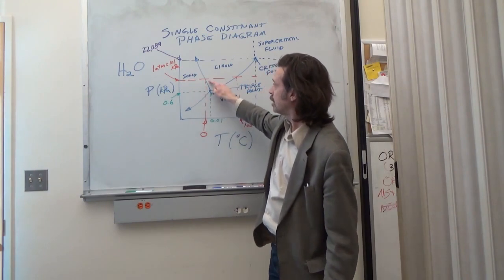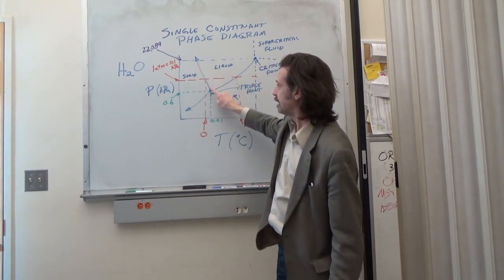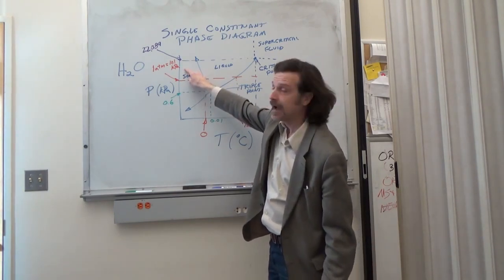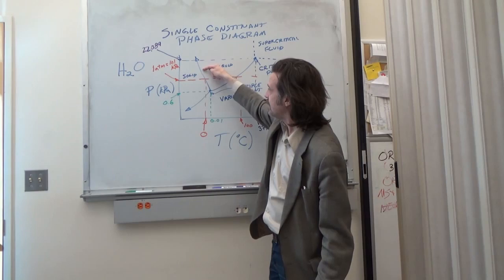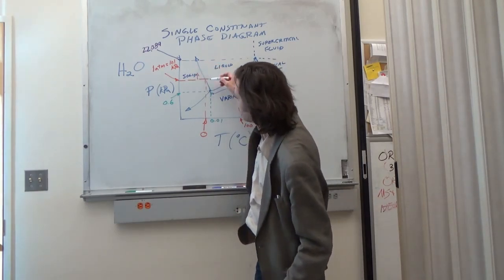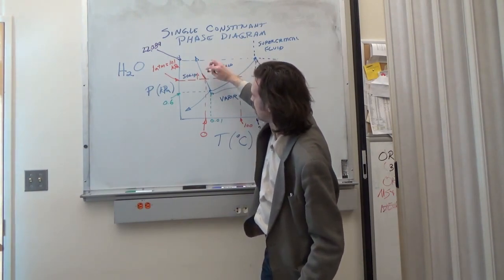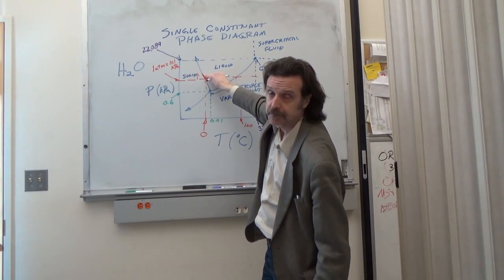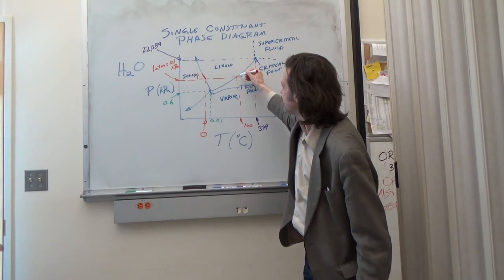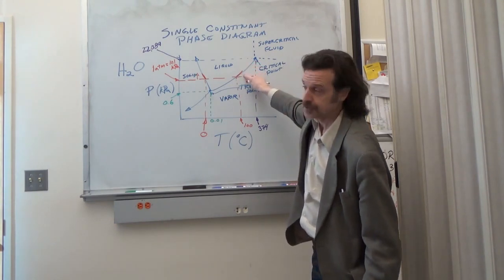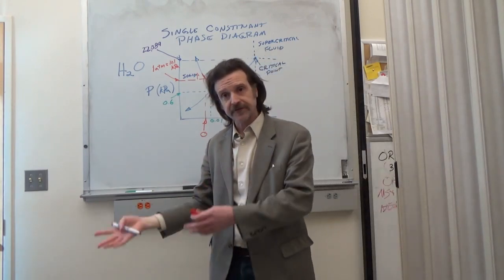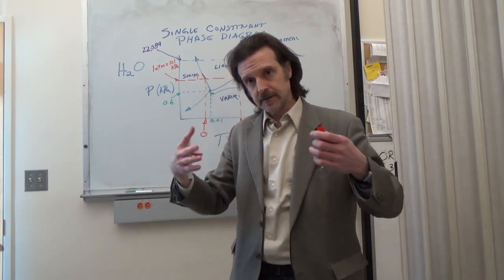As we change the pressure we're essentially saying that this blue line is a change in the melting temperature. So if we go to a slightly higher pressure then the pressure is going to shift the melting point to a lower temperature and it's going to shift the vaporization point to a higher temperature. So this phase diagram is a way of mapping out what phases are present in a set of conditions.